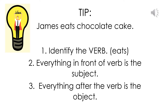Here is a tip to make it easier. In the sentence 'James eats chocolate cake,' first identify the verb — the verb is eats. Everything in front of the verb is the subject; in this sentence our subject is James, because James is written in front of the verb. Everything after the verb is the object; in this sentence it is chocolate cake.